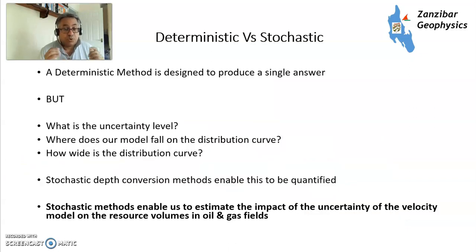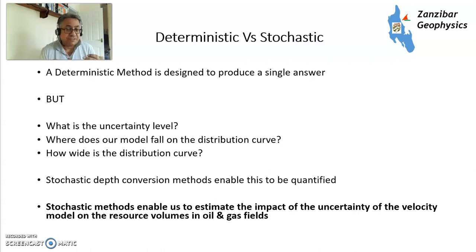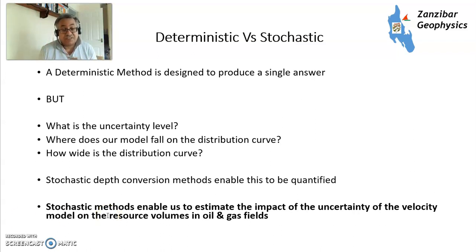A deterministic model gives you one answer — a single result using one method. For some situations that's perfectly fine, but you don't know what the uncertainty level is, you don't know where the model falls in the distribution curve — it could be an end member and you just don't know unless you have several models. Stochastic methods enable you to quantify this, to understand the impact of velocity model uncertainty on resource volumes in oil and gas fields, and to make the right decisions — selecting the right concept and placing wells in the right places.